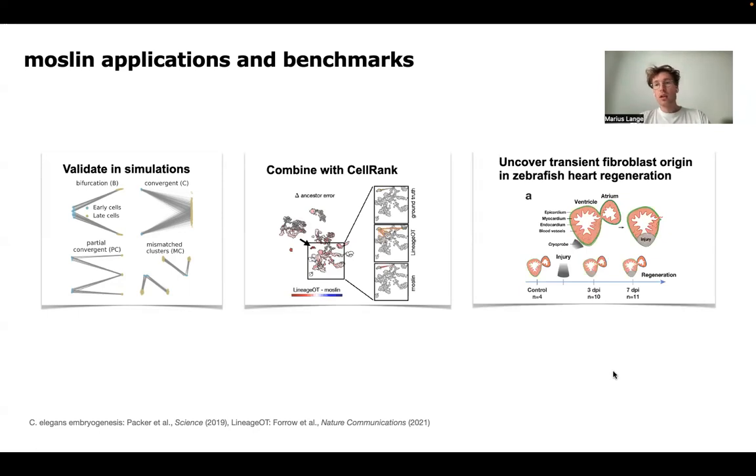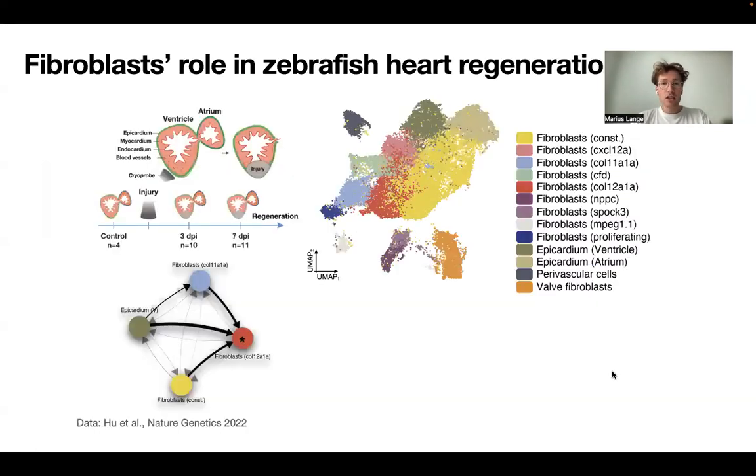And lastly, we go to zebrafish heart regeneration, where it has previously been established that there's some transiently activated fibroblast states that are important for this process of injury regeneration here. And now in Moslin, we're asking the question, how are they dynamically related? So where do these states derive from and how are they related to one another? So what is really the temporal sequence of activation of these different states?